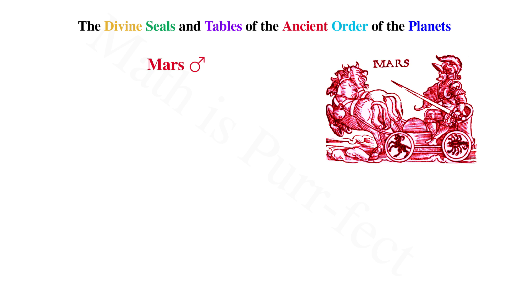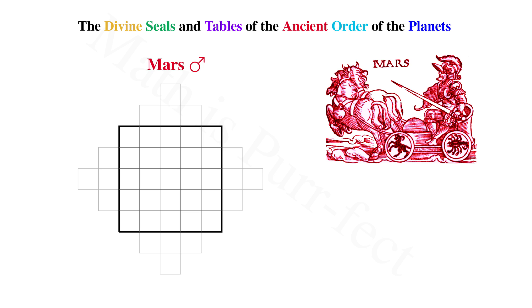Since Jupiter was a 4x4 Magic Square, we proceed up 1 integer to a 5x5 for Mars. Since this is an odd number, we can create the diamond pattern as used in the creation for Saturn's Magic Square.